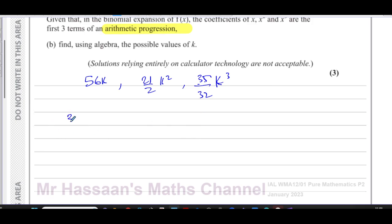So I know if I take 35 over 32k cubed, and I subtract from it 21 over 2k squared, I'm going to get exactly the same answer as 21 over 2k squared, take away 56k. They'll give me exactly the same difference because they are an arithmetic progression. So if I solve this equation, I have sorted out the question.